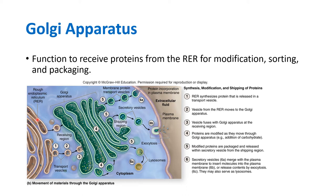Looking at this image of the rough ER, you can see the ribosomes on its surface making proteins. Those proteins enter into the rough endoplasmic reticulum, and then part of the rough ER gets pinched off. This pinched-off portion, now called a transport vesicle, carries a bunch of proteins. Those proteins are going to make a stop at the organelle known as the Golgi apparatus, where the vesicle merges with the Golgi membrane and deposits its proteins.